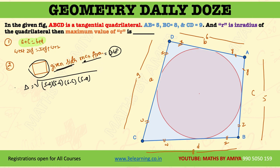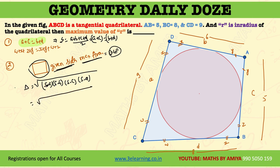This should be known. For given sides, maximum area comes from the cyclic quadrilateral. The semi-perimeter is (A+B+C+D)/2. Since A+C = B+D for a tangential quadrilateral, we can simplify: S minus A gives (A+C), A cancels and C cancels. S minus B gives (B+D), B cancels and D cancels. S minus C gives A, and S minus D gives B. So the area simplifies to √(A·B·C·D).